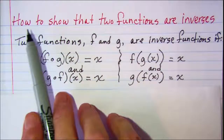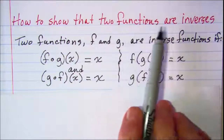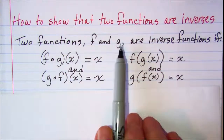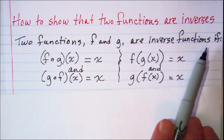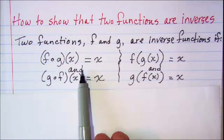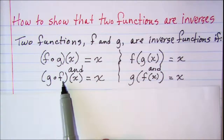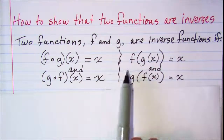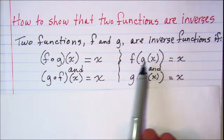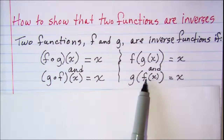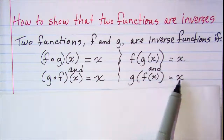In this video we'll look at how to show that two functions are inverses. Two functions f and g are inverses if f composition g of x is equal to x, and g composition f of x is equal to x also. This notation says the same thing: f composition g of x equals x, and g composition f of x equals x.